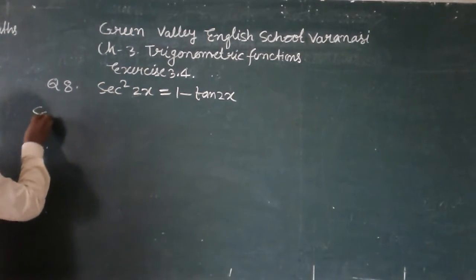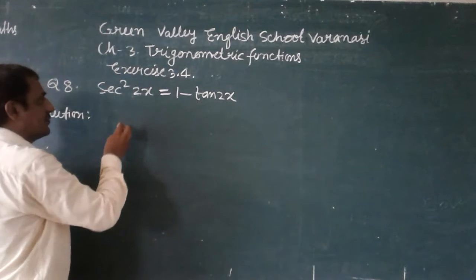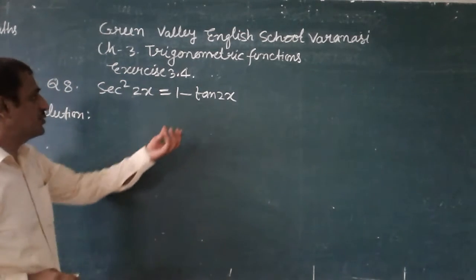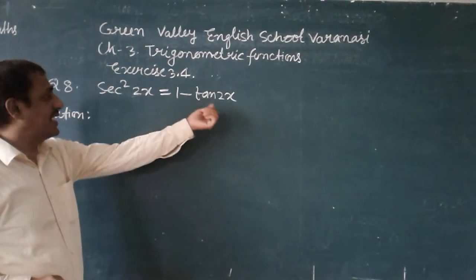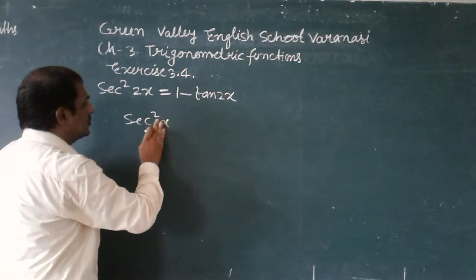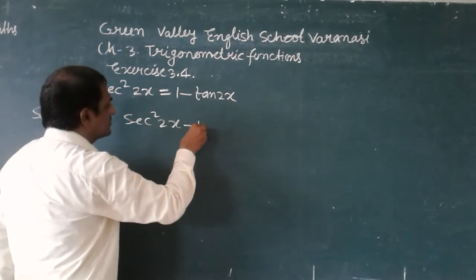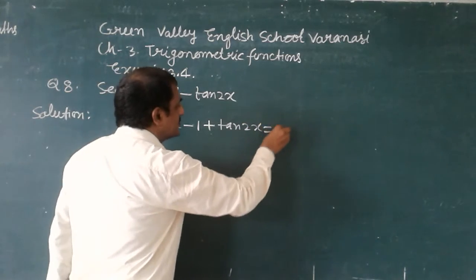First I am going to transpose all the terms, 1 minus tan2x, towards the left side of the equal sign. sec²2x minus 1 plus tan2x is equal to 0.